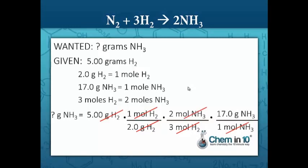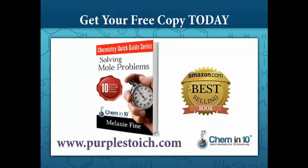We multiply the numerators together and divide by the denominators and we get 28.3 grams of ammonia. I said our answer would be somewhere less than 34 grams, and 28.3 grams fits that estimate. I hope you enjoyed this video! To get more stoichiometry help and a free copy of my Amazon book Solving Mole Problems, go to purplestoic.com. This is Melanie Fine and this is Chem in 10.